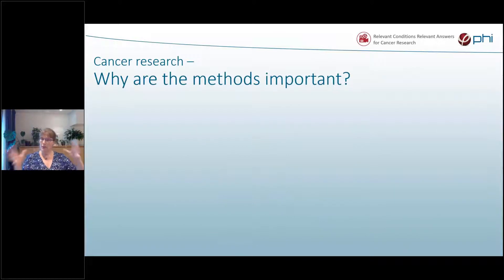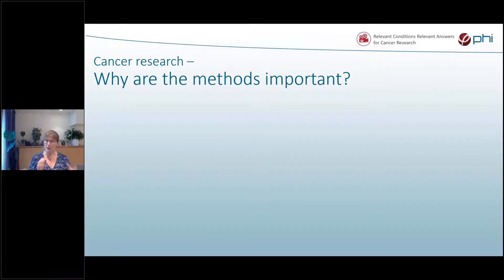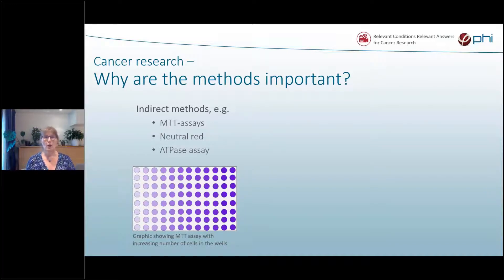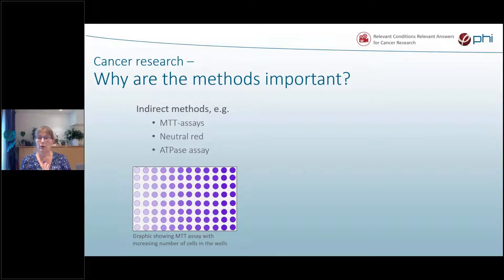In addition to conditions, the methods we use are often also not quite relevant. So why are methods important? Often when we want to study drug response, cell growth, or cell migration, we use indirect methods — for example, MTT assays, neutral red, or APBA assays. These are indirect and therefore, from my perspective, not fully relevant.